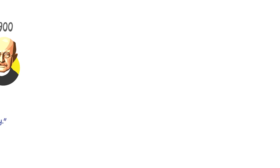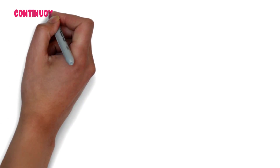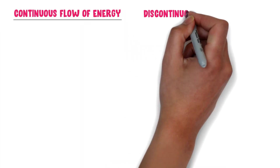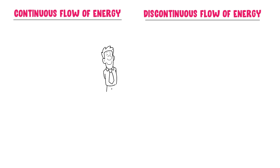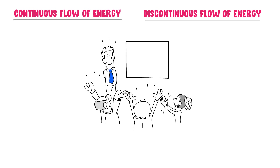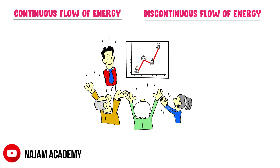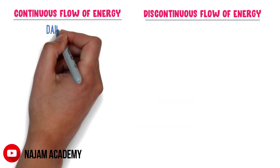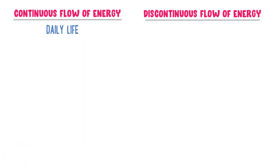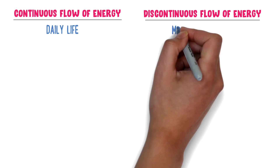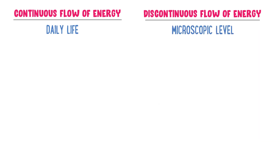Now I am going to teach you the concept of continuous flow and discontinuous flow of energy. If you understand this concept, you understand Planck's quantum theory — something not commonly taught in school or college. Remember that continuous flow of energy happens in our daily life, while discontinuous flow of energy happens at the microscopic level.